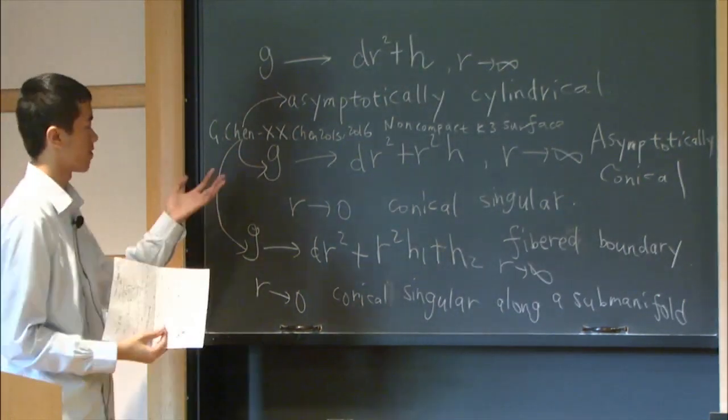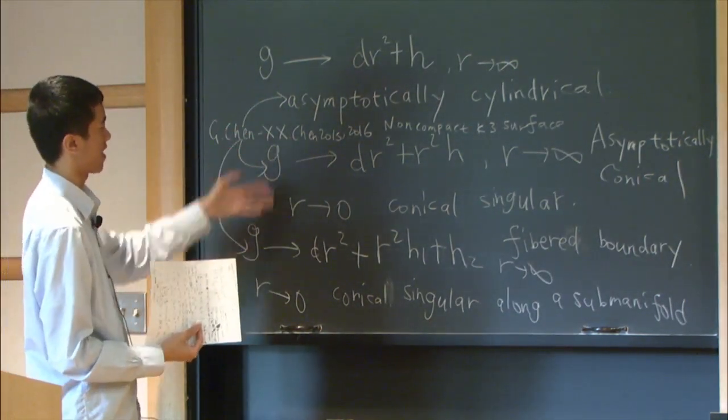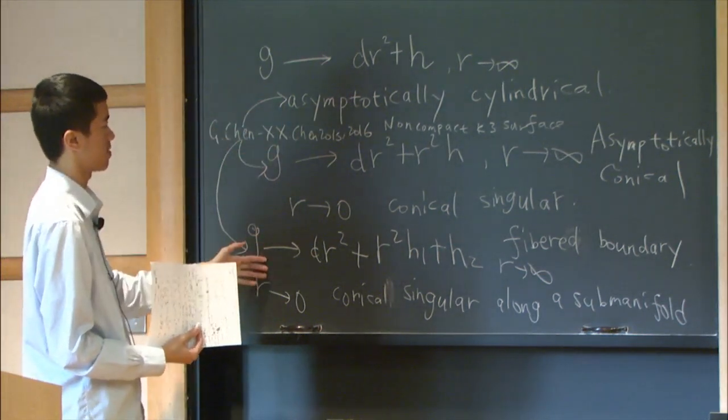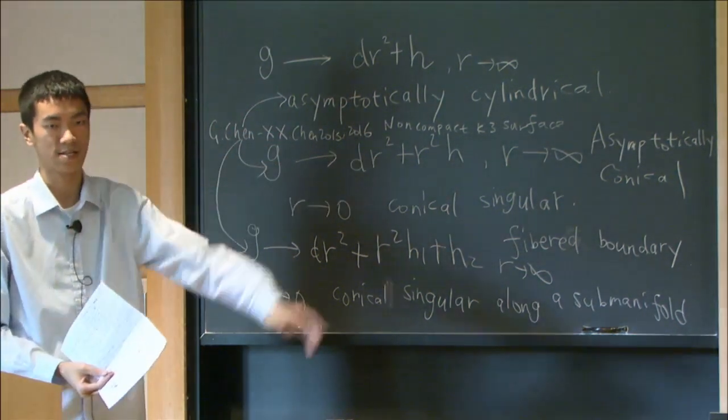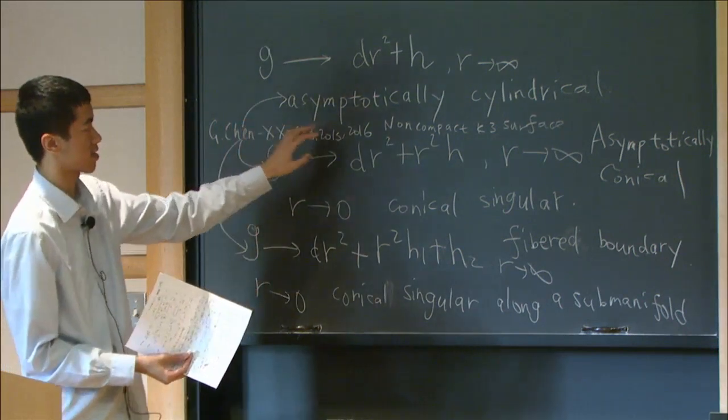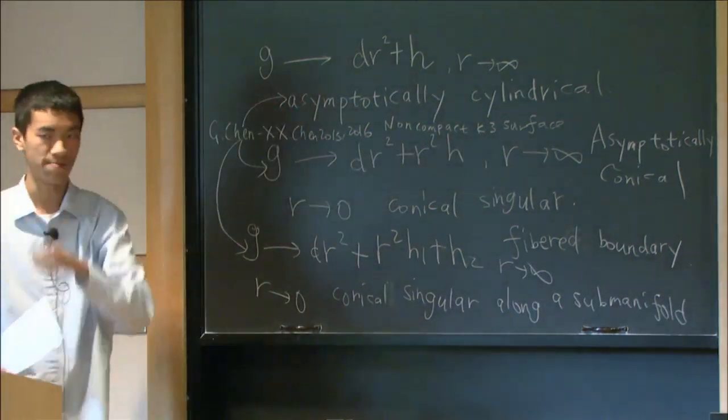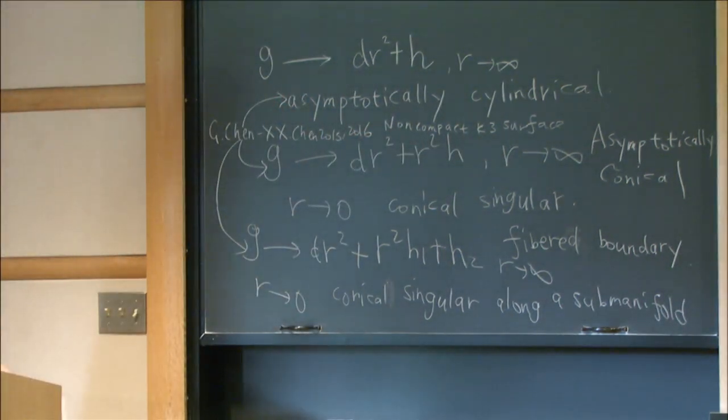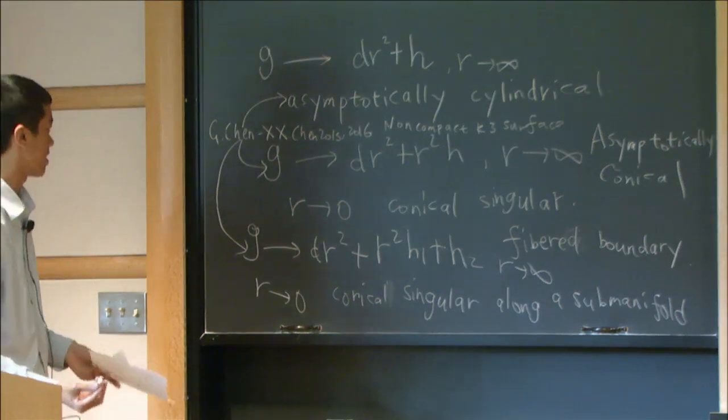We, first of all, use some method to show that it must have this correct boundary behavior. Then, we use this analysis to give a complete classification of non-compact version of K3 surface.